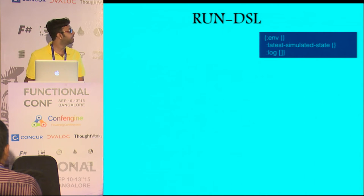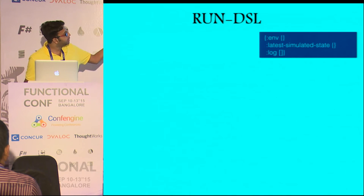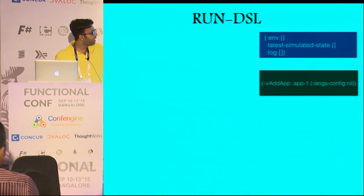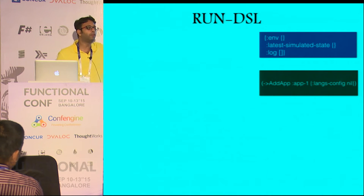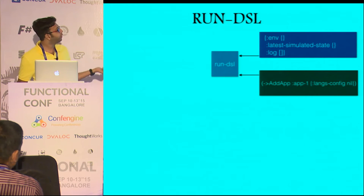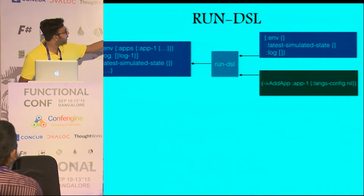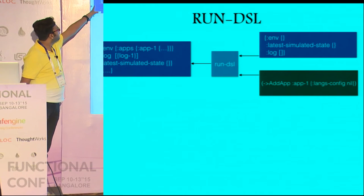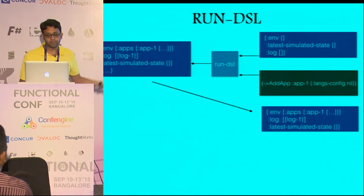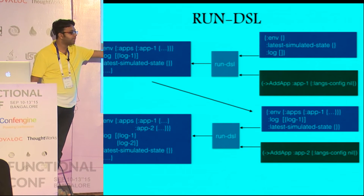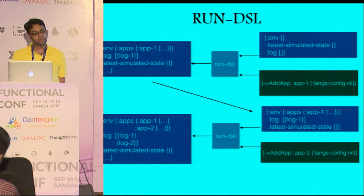Let's take a more concrete example. That's the initial context where the environment is empty, latest simulated state is empty because there is no state right now, and the log is an empty list. Then you start with one action: add app, call it app 1, with language configuration nil — nil because by default we always have English. You give both to the run DSL function and you get an updated context back, which has the environment with app 1 with whatever ID. Now you pass it back again, the second action is add app 2, you add that to the environment, and then keep going.